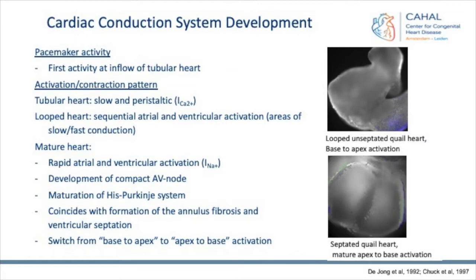Here you see this looped, unseptated quail heart. This is an optical mapping movie with a voltage-sensitive dye, and you can see a base-to-apex activation, which is the primitive activation. And here you have a septated quail heart, where you can see there is mature apex His-Purkinje activation of the ventricle.